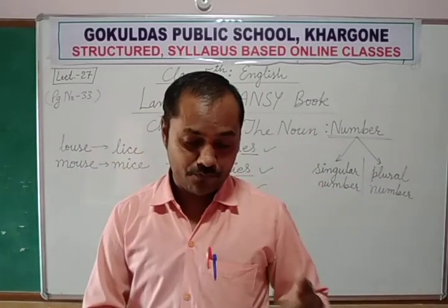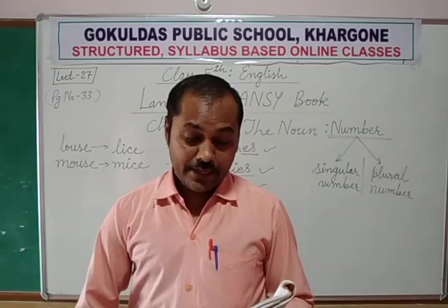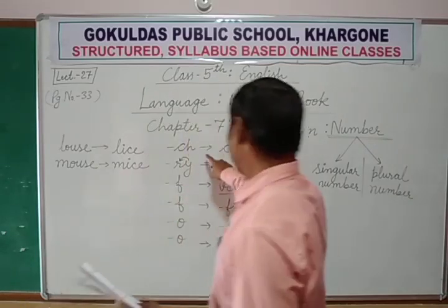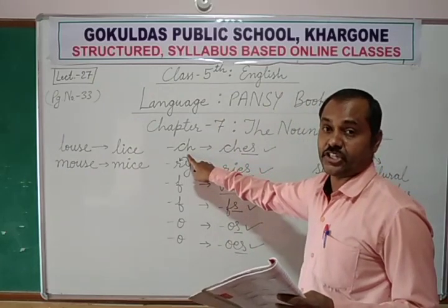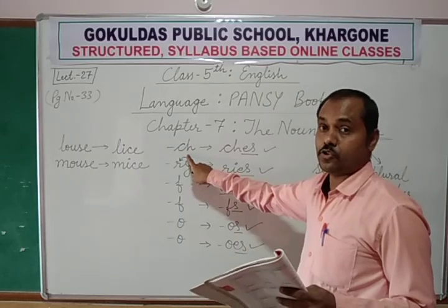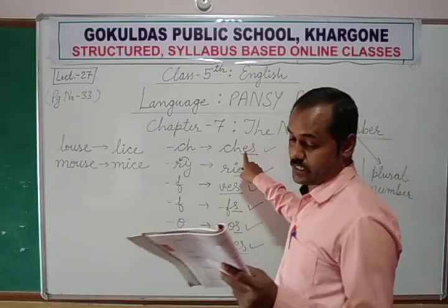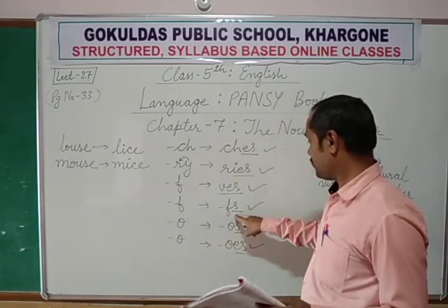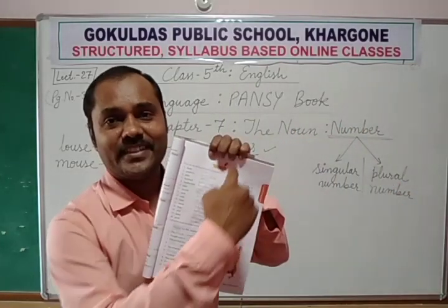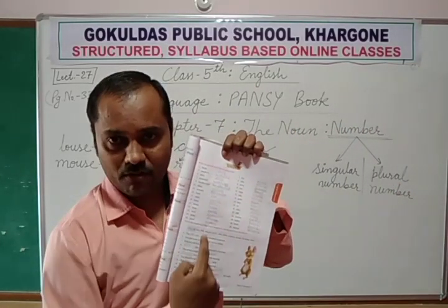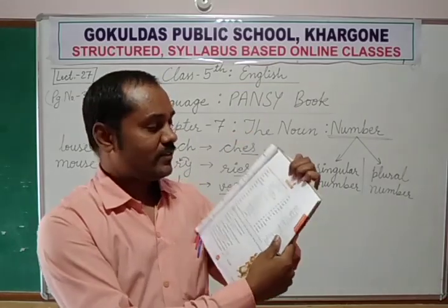'Dress' — words ending with the S-sound or double S follow the rule of adding 'es': 'dresses'. 'Proof' — just add S: 'proofs'. Now we are moving to the second column of the exercise.